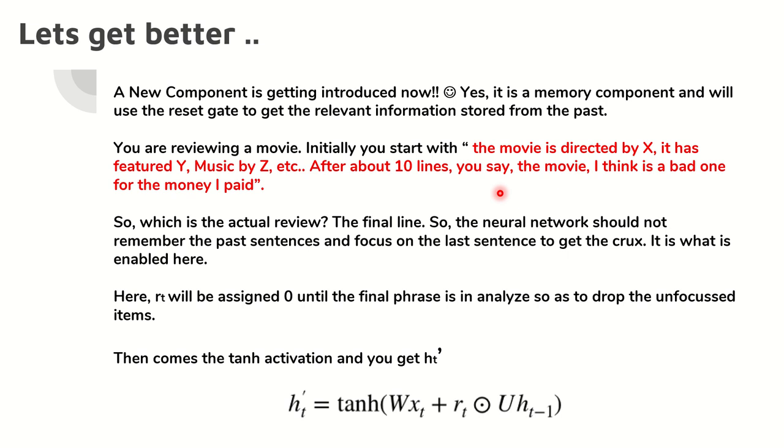This is what you are conveying. Now, which is the most important information you need to take from this? Not the first nine lines. The last line is the one that is the actual review, which has to be taken and considered by the neural network. So that is the kind of work that we are doing here. Now, what will we do? Very simple. The actual review has to be extracted. The neural network should not remember the past sentences and it should focus only on the last sentence to get the crux. This is what is done through the new component that we have added. So, Rt will be assigned zero. What is Rt? Reset gate. Rt will be assigned zero until we get into the final phase and it will drop all those unnecessary information. I mean, unfocused items and only when we get into the crux, it will become one and that will be partial.